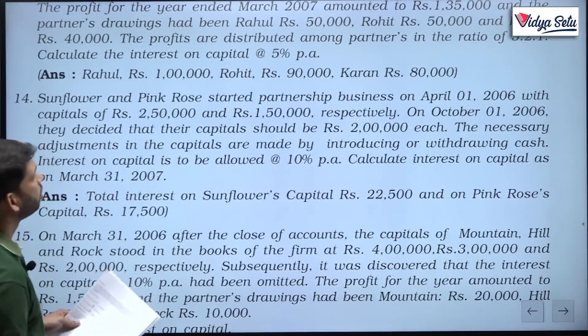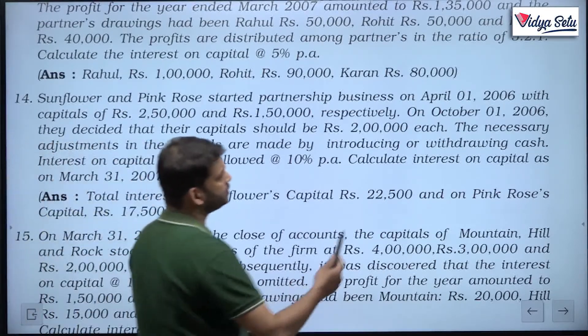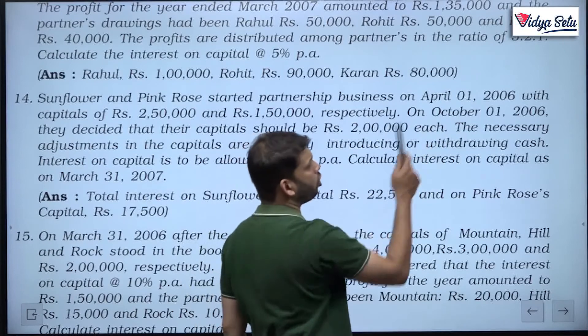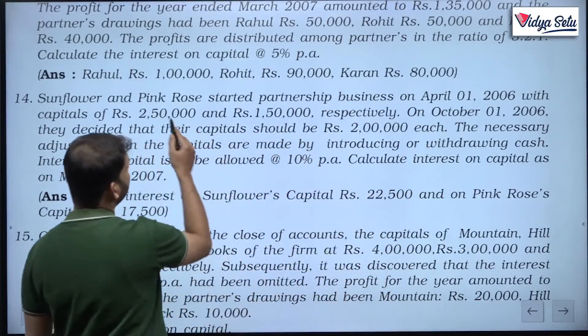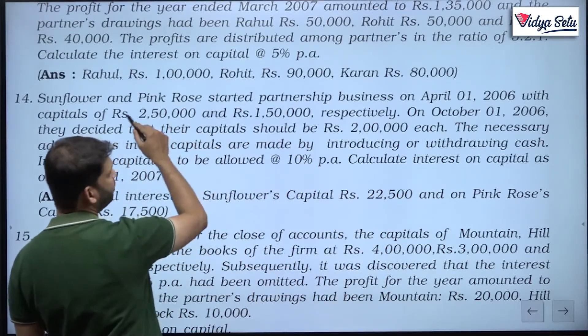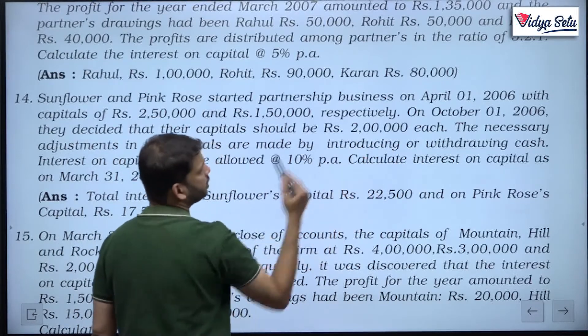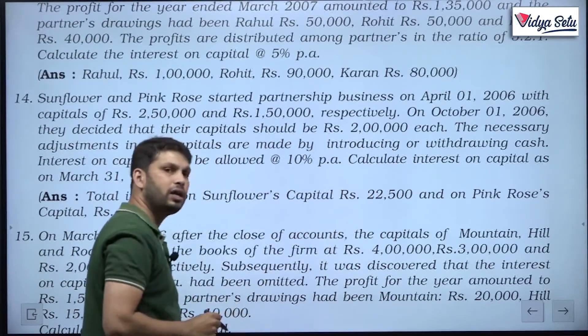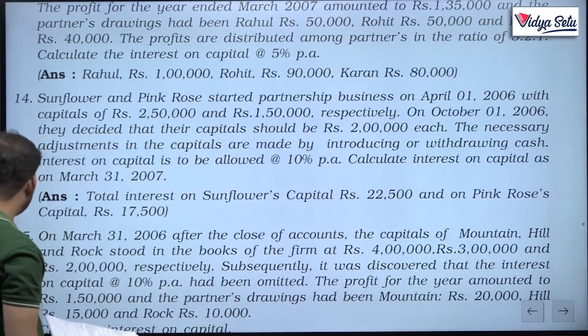So, when did they decide? They decided on 1st October. Till 1st October they will get interest on capital on these original amounts. After 1st October they will get interest on capital at 2 lakh each. So, again an easy one, let us solve it.